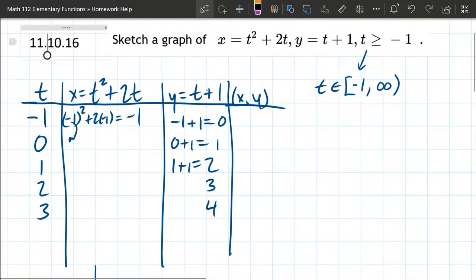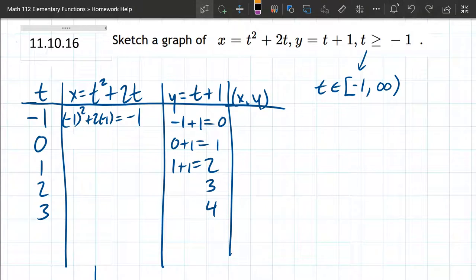Next up we got 0, 0 squared plus 0, which is 0. 1 squared plus 2 times 1, so that's 3.